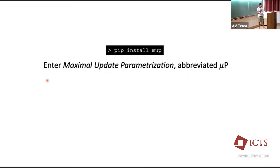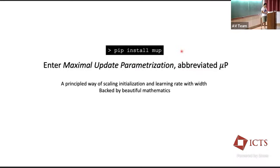The hero of this story is doing the right mathematics. The technique underlying this is called μP — maximal update parameterization, abbreviated μP — and it's something you can already use today, for example by running pip install torch-mup if you are a PyTorch user. The idea is really quite simple: a principled way of scaling initialization and learning rate with the width of the neural network, backed by beautiful mathematics.